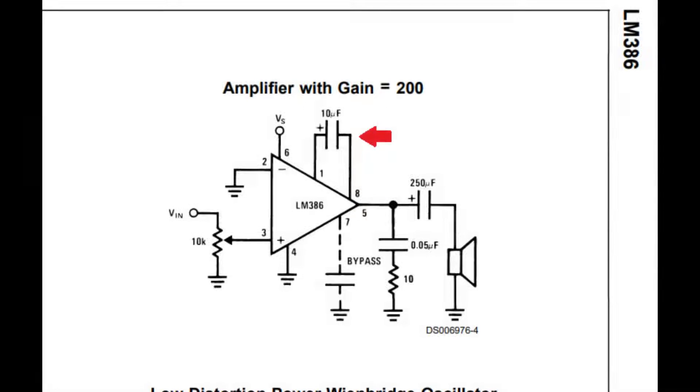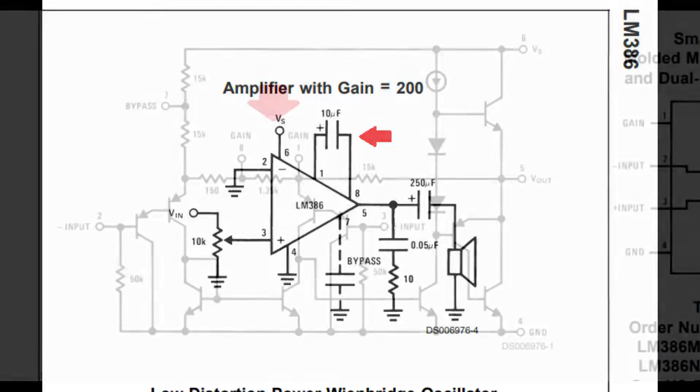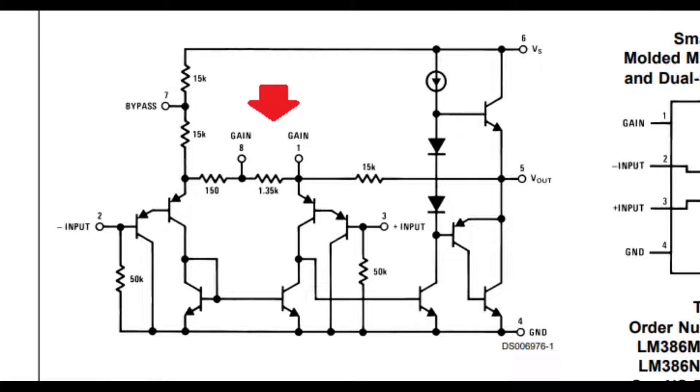If you plug a 10UF capacitor into the 1 and 8 pins, the gain goes up to 200. The reason you need a 10UF capacitor here is that the capacitor needs to be large enough to couple the internal 1.35K resistor between the two gain pins as shown in the equivalent schematic.